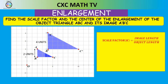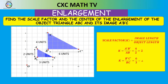For example, using side A prime B prime, that has a length of 4 units, and the corresponding object side AB is 2 units — so 4 over 2 equals 2. Using B prime C prime over BC gives 6 over 3, which is still 2. It doesn't matter which corresponding sides we use; the scale factor is 2.